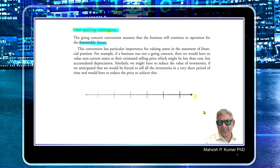Going concern means we assume, while preparing financial statements, that the business will continue its operations and survive into the foreseeable future. However, the question arises: how long into the future? Will it be one year, five years, or an indefinite period? This is not clearly defined by general convention and can differ across various accounting standards.